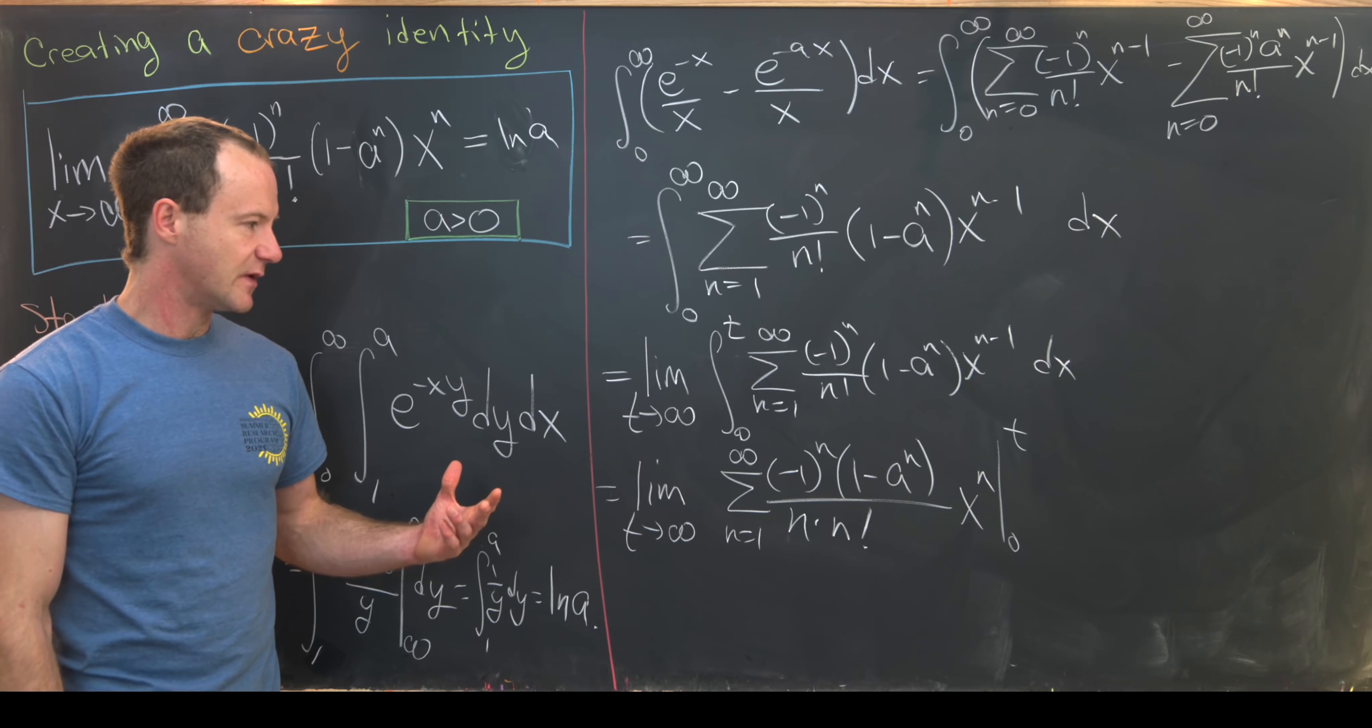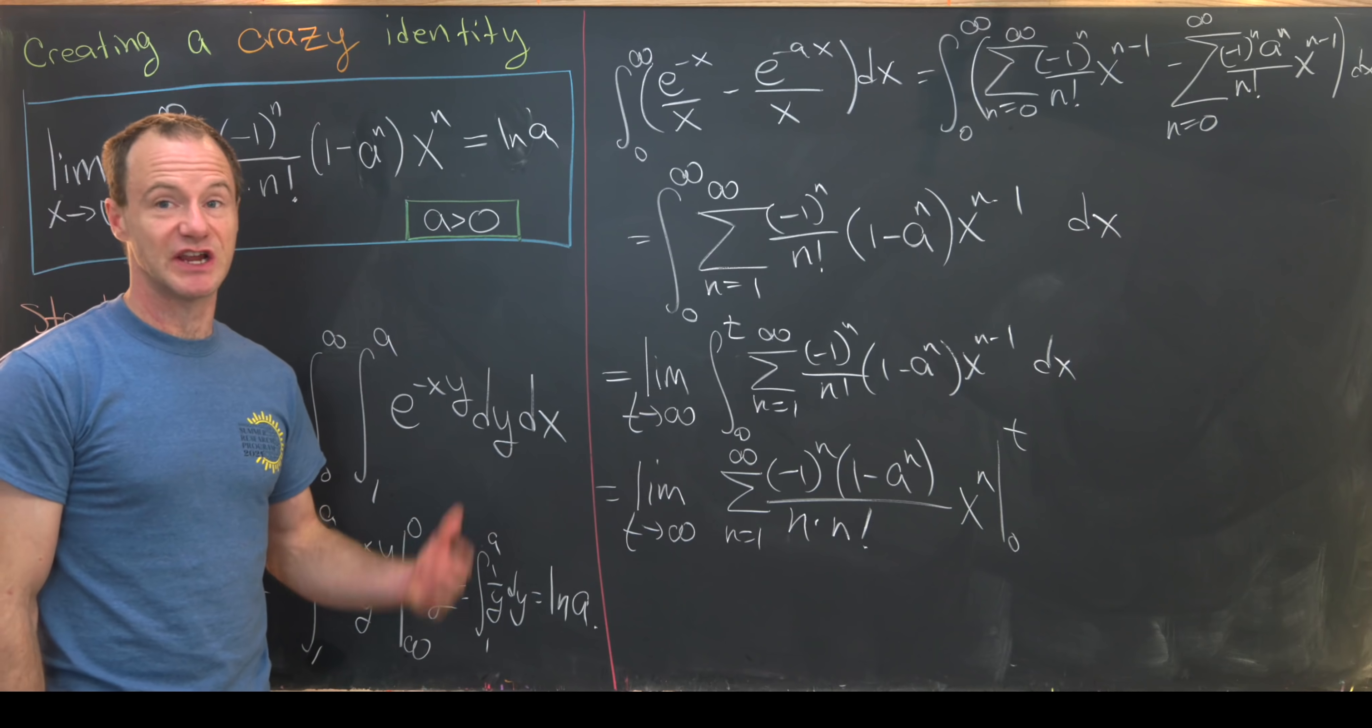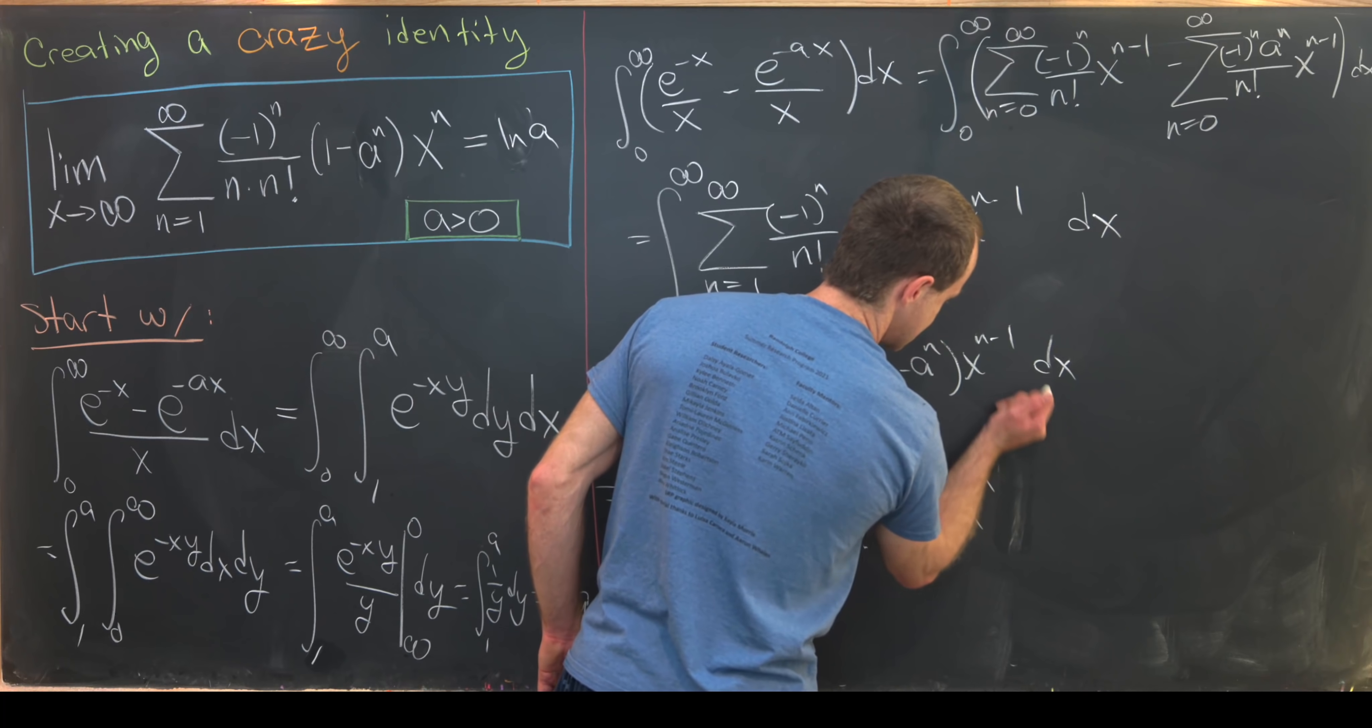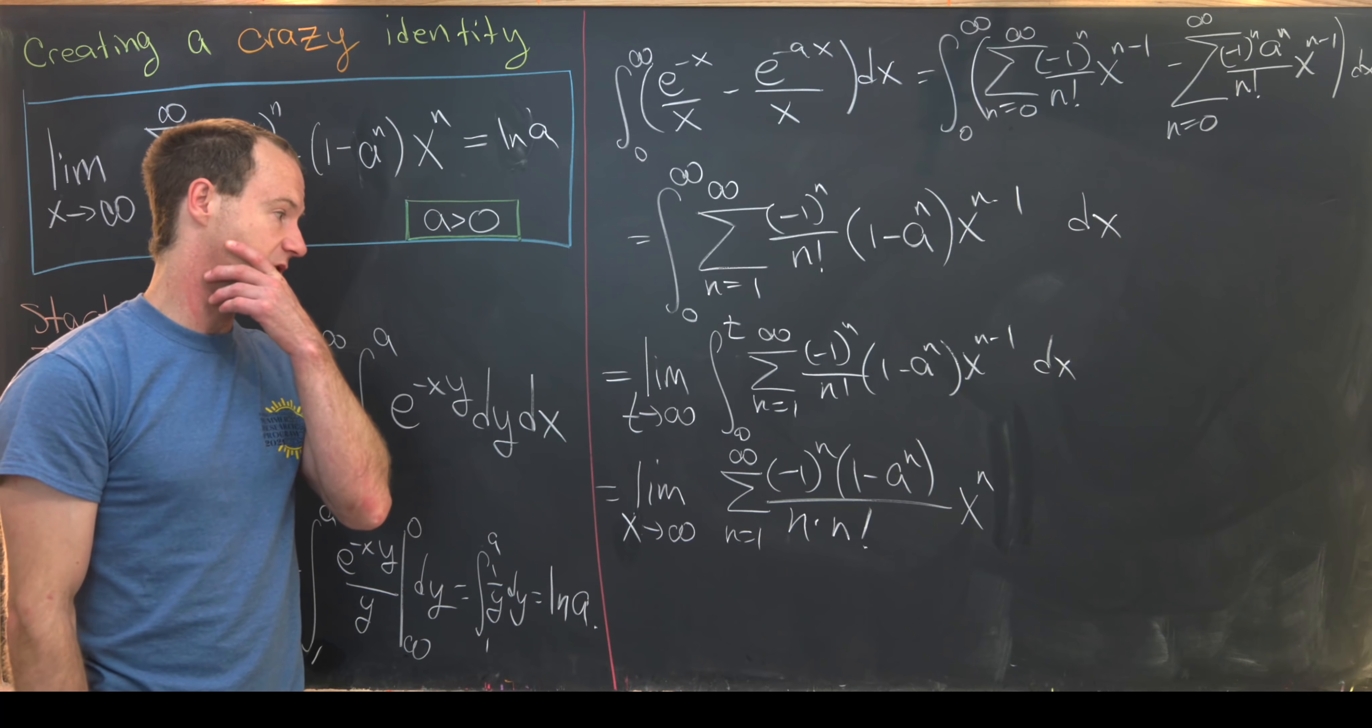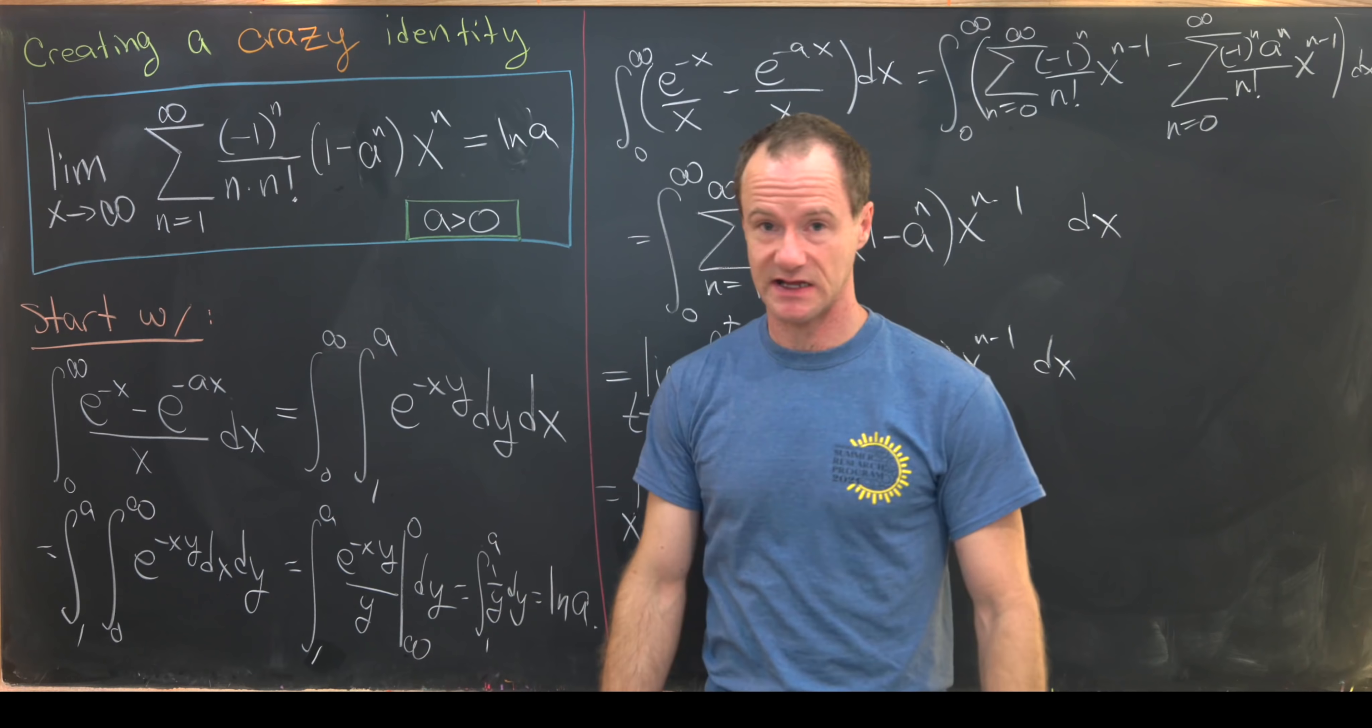Then what happens if we evaluate it at t? Well that just puts it in terms of this limit. So we could do a change of variables here. Let's change this t to an x and then we can replace this with nothing because we've evaluated it at x keeping in mind that that evaluation at 0 is equal to 0. And now let's look at what we've got. Look, we've just constructed this left-hand side of our identity.